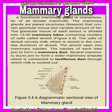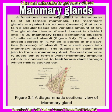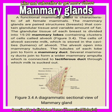Mammary glands: a functional mammary gland is characteristic of all female mammals. The mammary glands are paired structures, also called breasts, that contain glandular tissue and a variable amount of fat. The glandular tissue of each breast is divided into 15 to 20 mammary lobes containing clusters of cells called alveoli. The cells of the alveoli secrete milk, which is stored in the cavities — the lumen — of the alveoli. The alveoli open into mammary tubules.